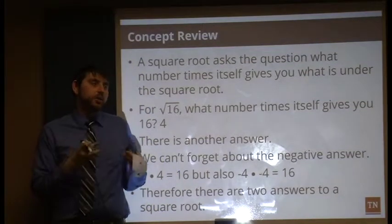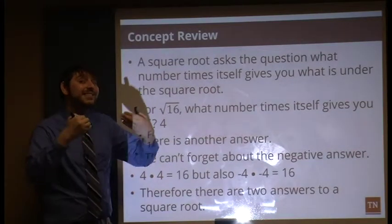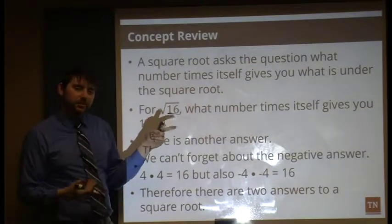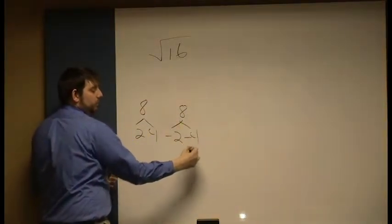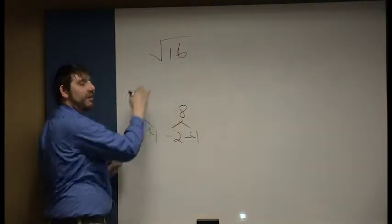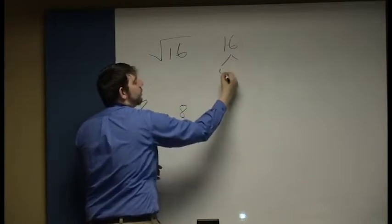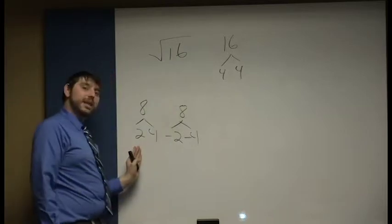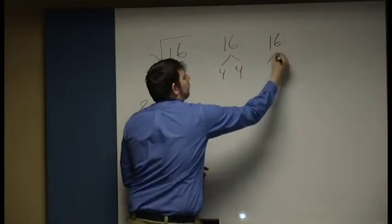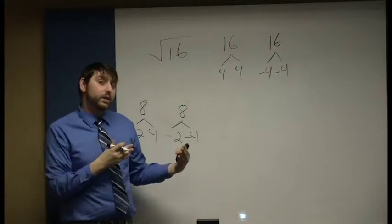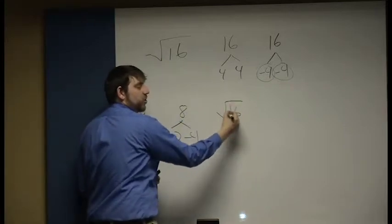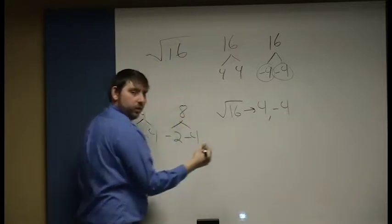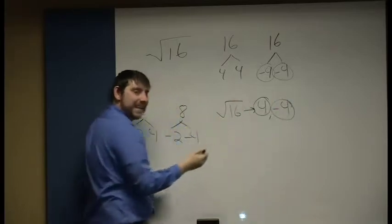Now, what does a square root ask? A square root is asking what number times itself gives you the value underneath it. For example, what number times itself gives you sixteen? That's four times four. But just like with factoring eight where we included the negative pairs, we can't forget the negatives here either. Negative four times negative four also gives sixteen. So the square root of sixteen has two possible answers: four and negative four. We need to understand that negative four is also a valid answer.